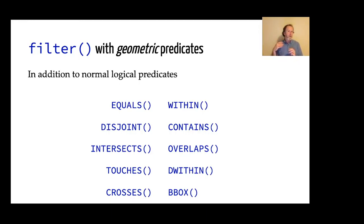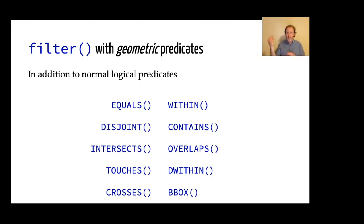We can also filter based on geometry. WFS allows doing geometric operations using the standard set of logical geometric predicates that many of us are used to: intersects, equals, within, contains, overlaps — all of these geometric comparisons. What I want to show now is how we can take that CRD municipalities object we just created and use that to get all of the green spaces — the parks and protected areas — that are within the capital regional district using these geometric predicates.